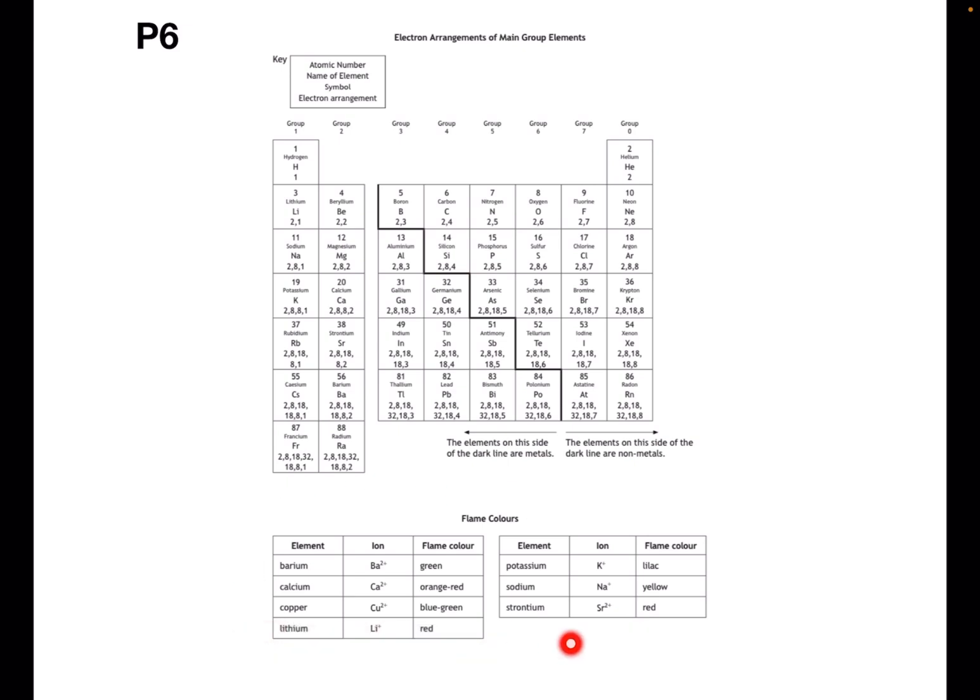At the bottom of the page we have the flame colors. You can use this when you're looking at chemical analysis. Each of these metals gives a different colored flame and from that color you can work backwards to work out what element you have present.